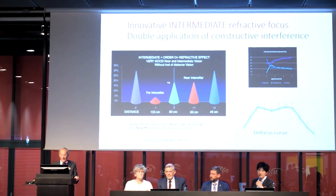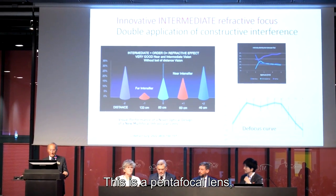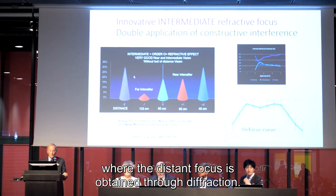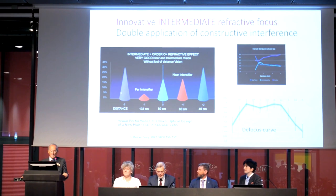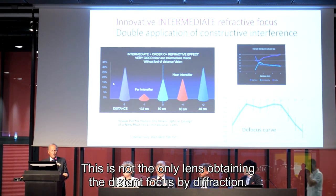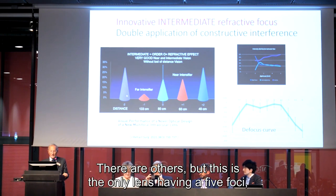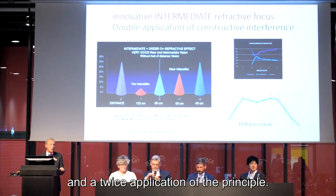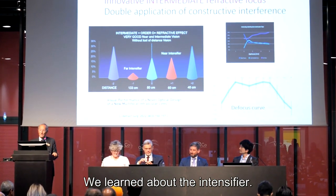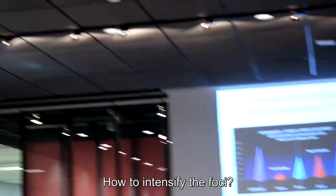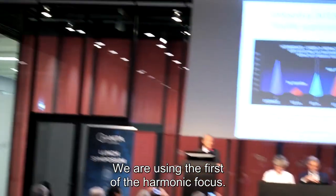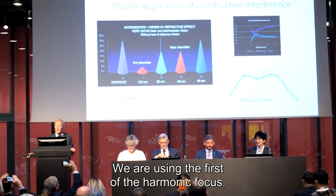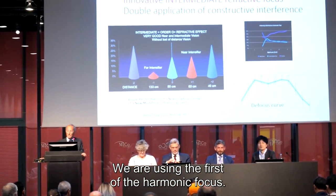What does this mean? This is a pentafocal lens where the distant focus is obtained through diffraction. This is not the only lens obtaining the distant focus by diffraction — there are others. But this is the only lens having five foci and a twice application of the principle we learned about regarding how to intensify the foci using the first-order harmonic focus.